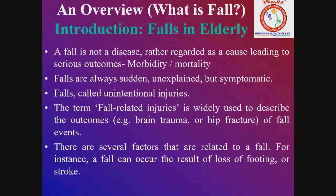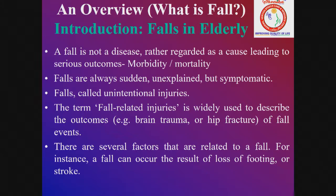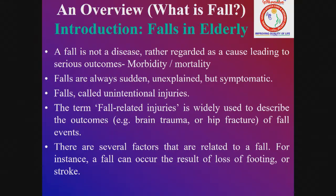First, an overview: what is a fall? A fall is not a disease, but rather a cause leading to serious outcomes — morbidity or mortality. Falls are always sudden and unexplained, called unintentional injury. The term 'fall-related injuries' is widely used to describe outcomes such as brain trauma or hip fracture. Several factors are related to falls, for instance, loss of footing or stroke.